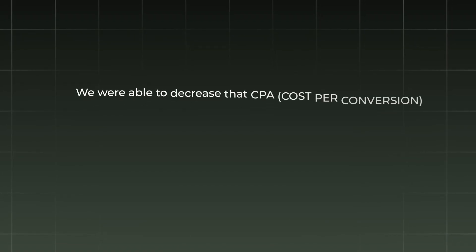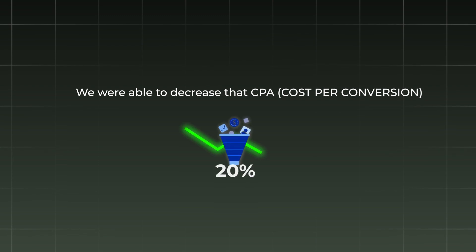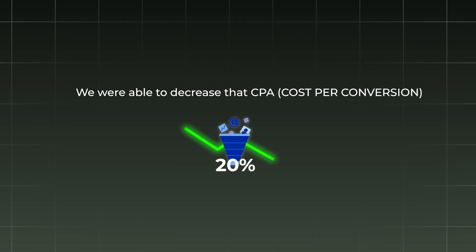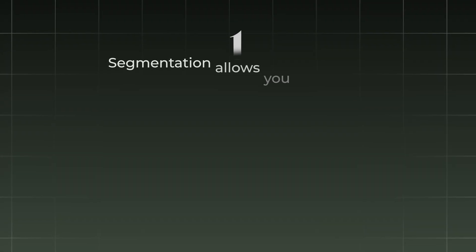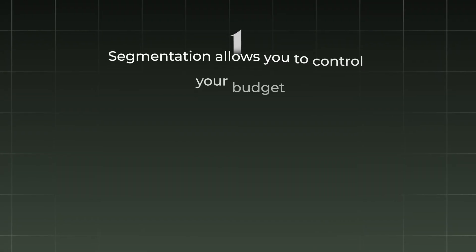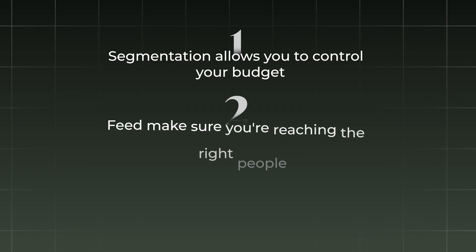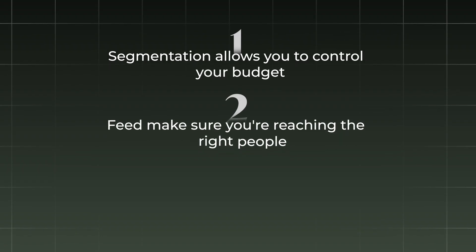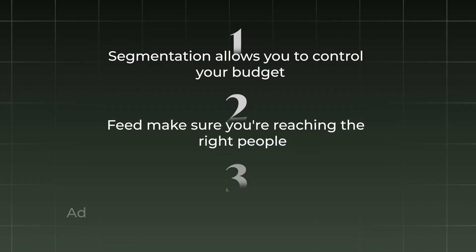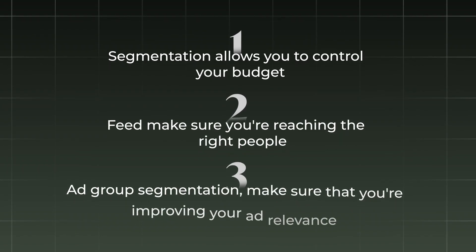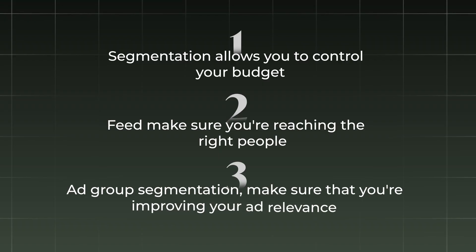For the jewelry brand we work with, by doing this we were able to decrease their CPA — cost per conversion — by over 20%. To summarize: segmentation allows you to control your budget, the feed makes sure you're reaching the right people, and asset group segmentation makes sure you're improving your ad relevance and speaking to the customers that are looking for you.